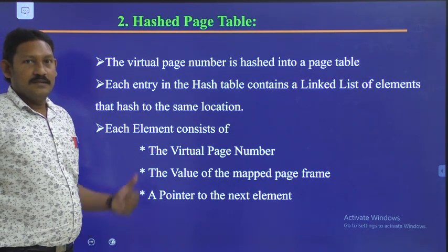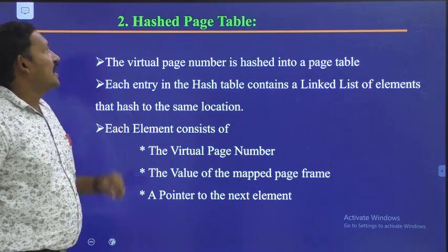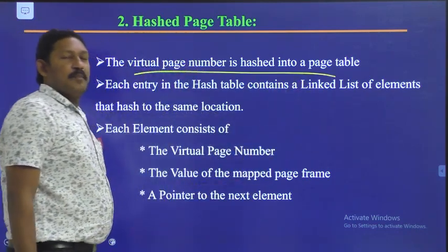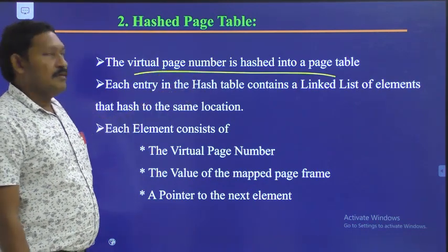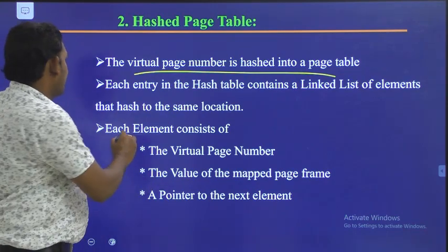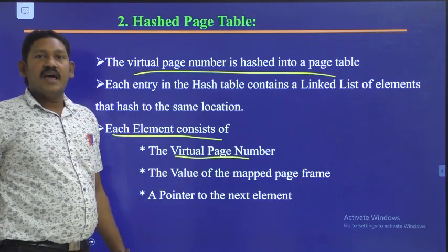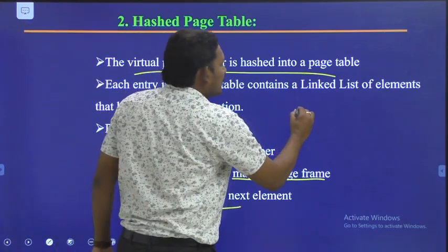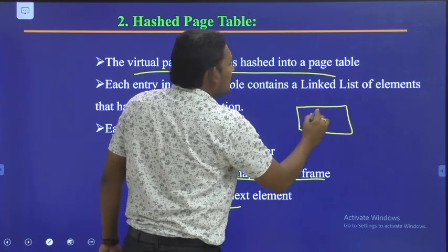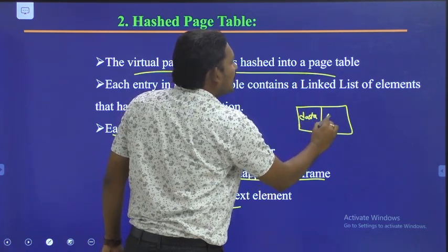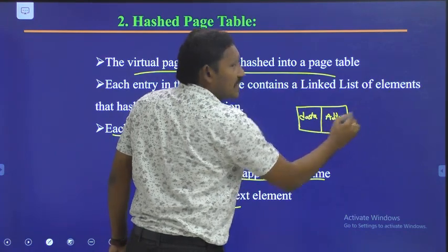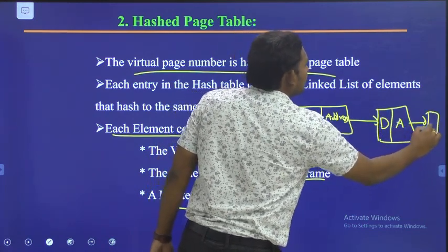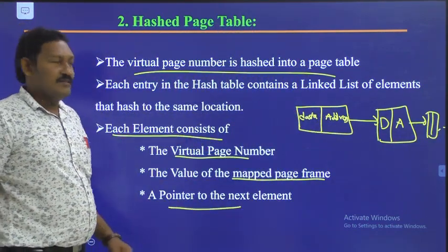Coming to the second page structure, it is the hashed page table. Here, a virtual page number is hashed into a page table. Each element consists of a virtual page number, a mapped frame number, and a pointer — similar to a linked list, where each node holds data and the address of the next element.